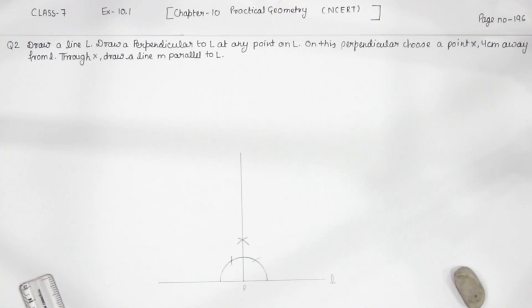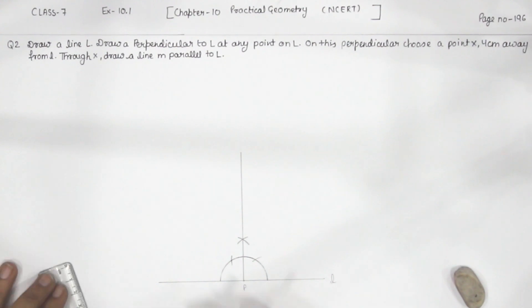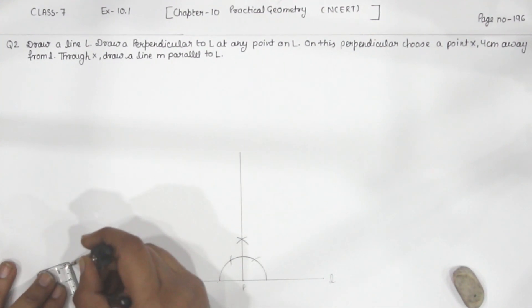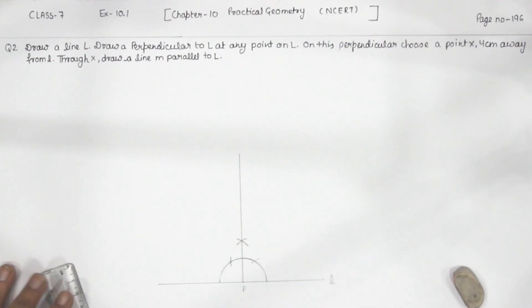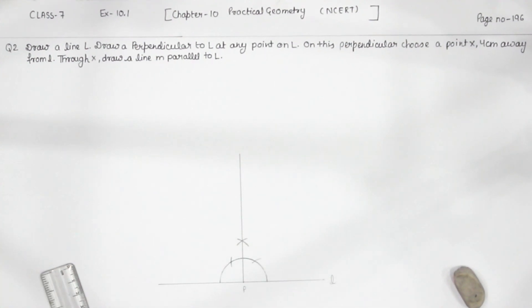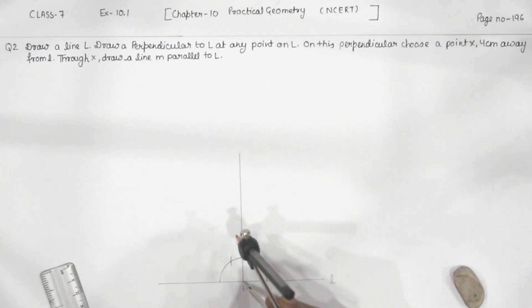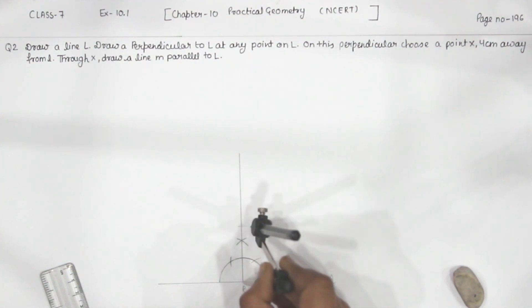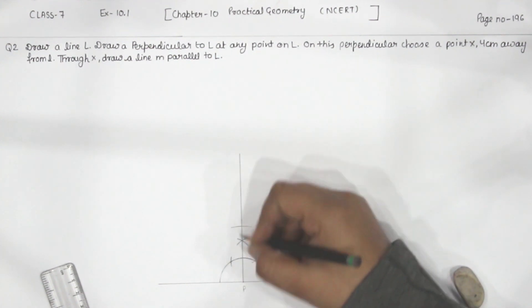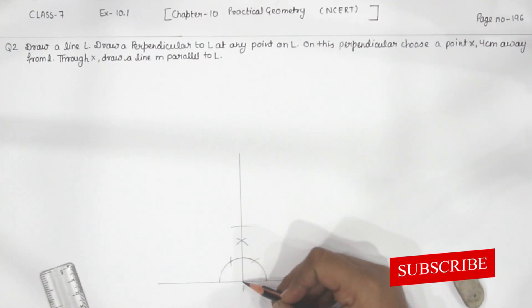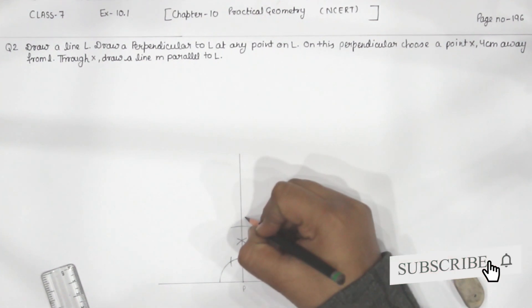For that, we are going to take the compass and we will take the distance of 4 cm. Now this is the 4 cm. Now we are going to draw an arc. This is the arc — 4 cm from the point P. Now this is the point X.